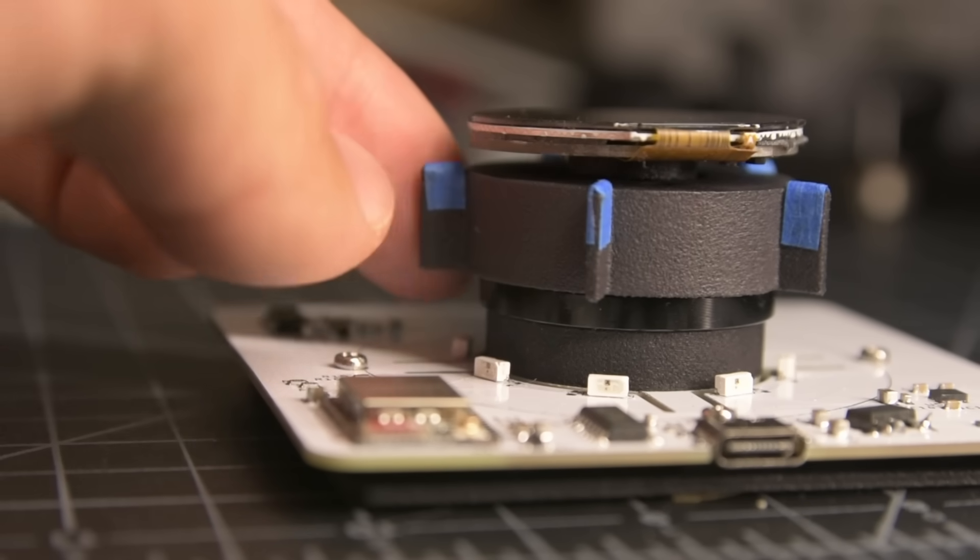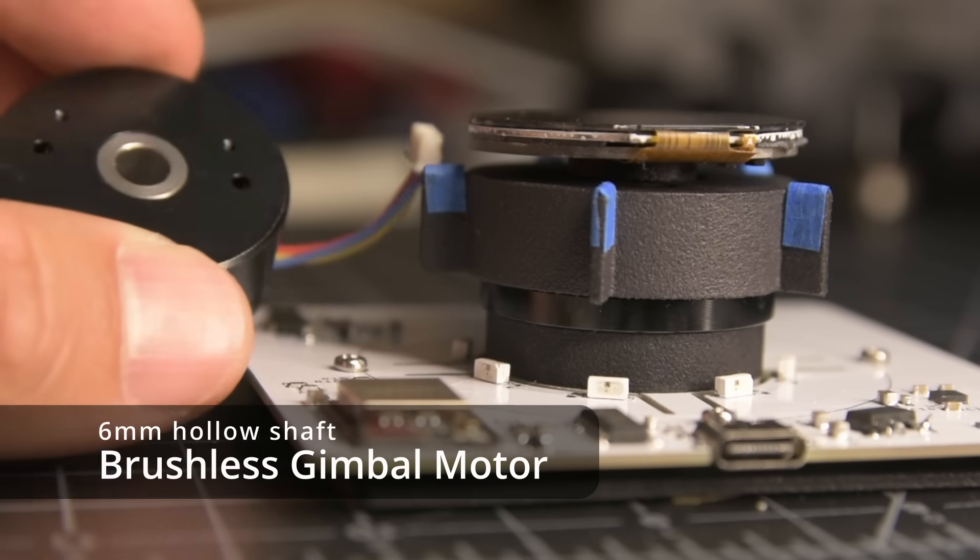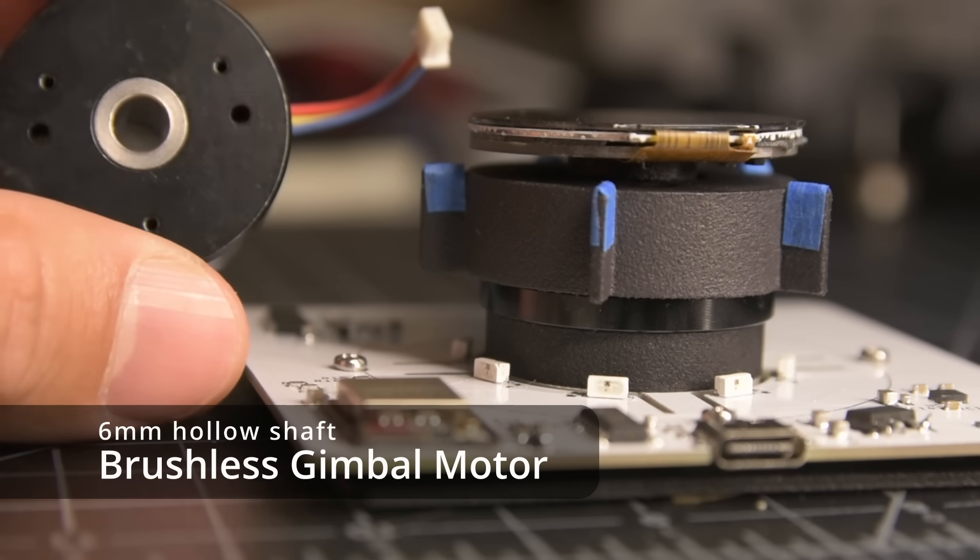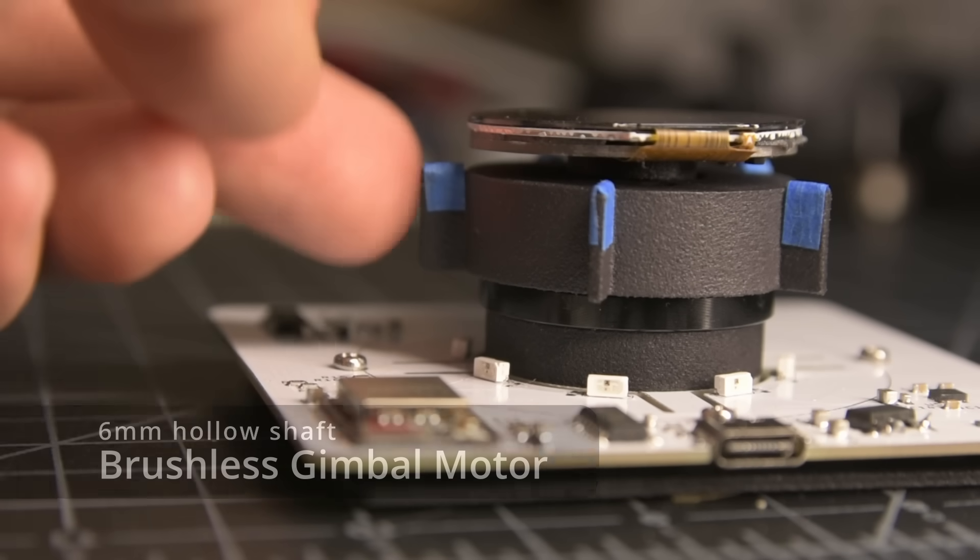Below the LCD is the brushless gimbal motor. The cool thing about this motor is that it's got a 6mm hollow shaft, which is how the LCD's power and data wires pass through without getting all twisted when you turn the motor.